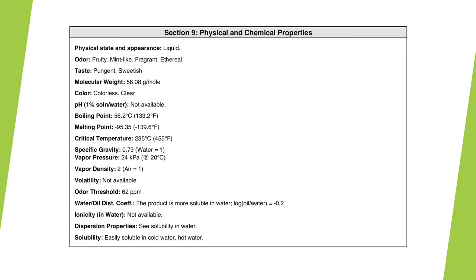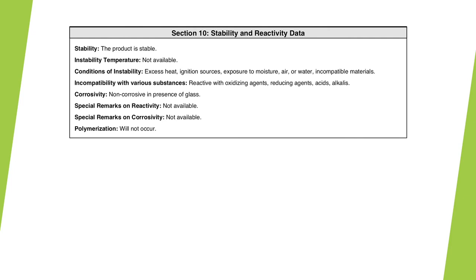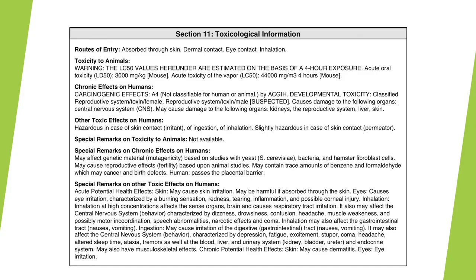Section 9 goes into further detail about the physical and chemical properties of the substance. Section 10 details stability and reactivity of the chemical or substance. Section 11 lists known toxicological risks associated with the chemical.